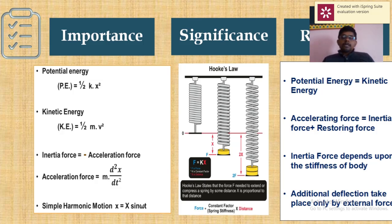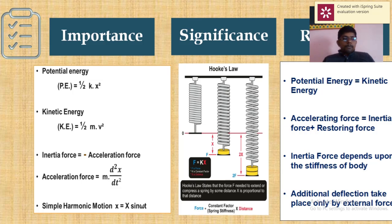For example, if you consider a mass of 10 kg and a mass of 5 kg and apply the same external force to both, the 10 kg mass expresses a higher level of inertia. The 5 kg mass can be easily moved using less inertia. Therefore, the amount of inertia depends upon the value of the mass or stiffness of the body.